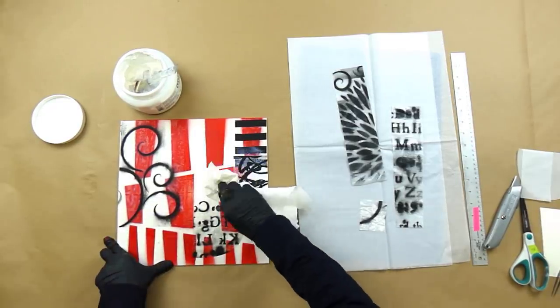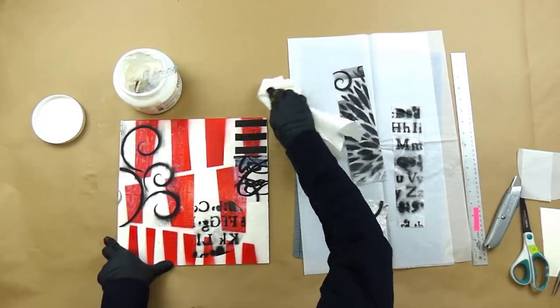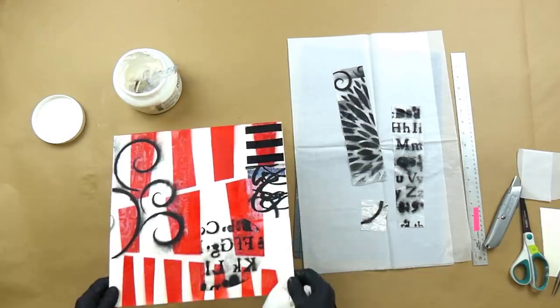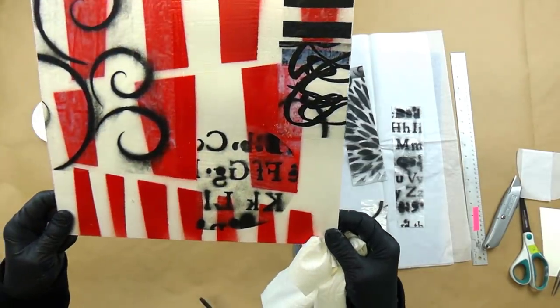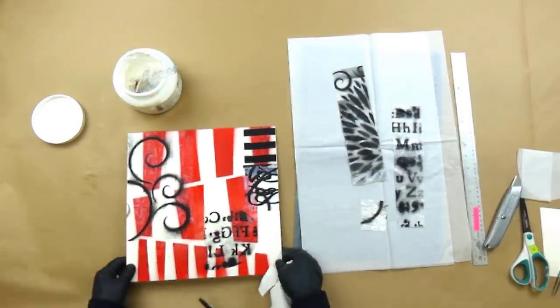So between stencil transfers, paint transfers, and image transfers, that's just a lot of options you have. And again, it'll look different once the gel medium dries, but you can kind of see how you can layer things and get a lot of depth.